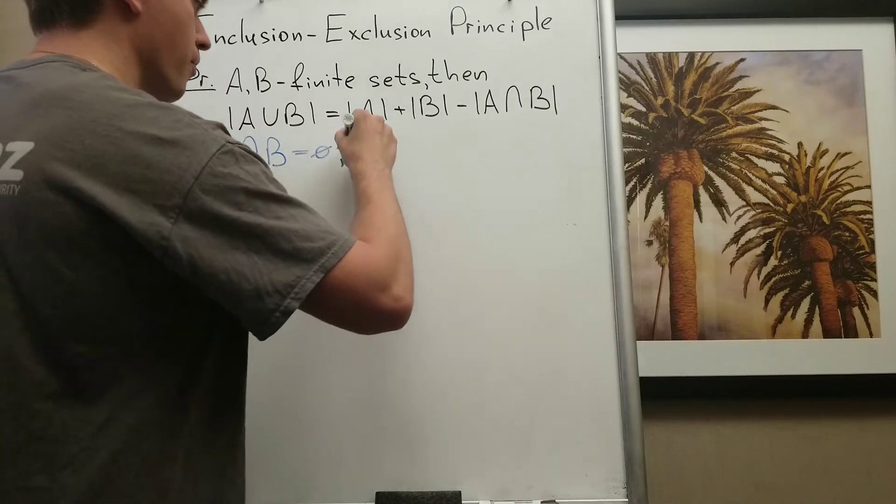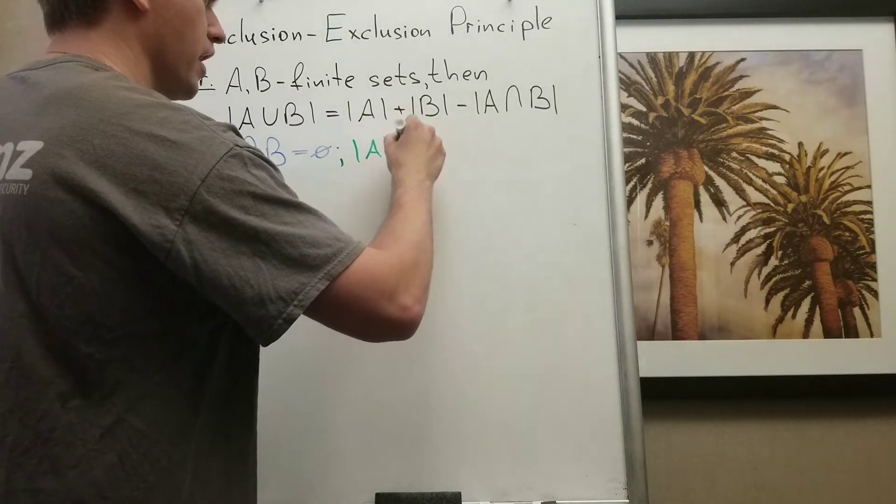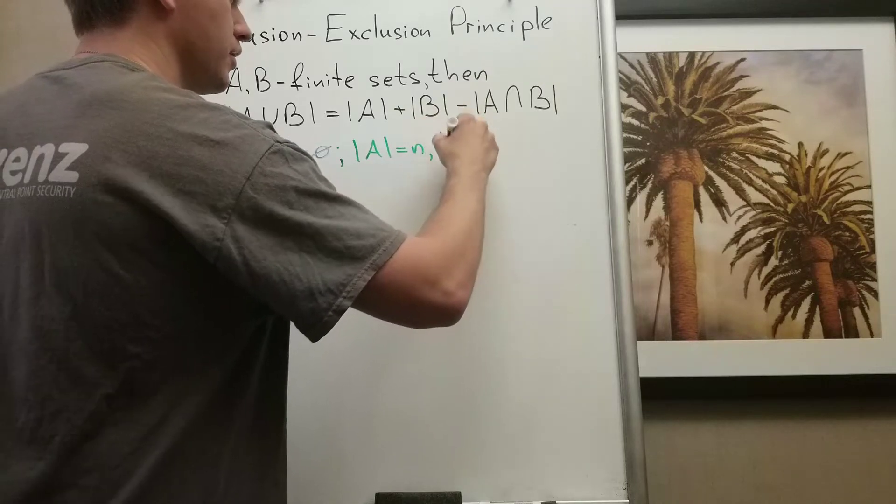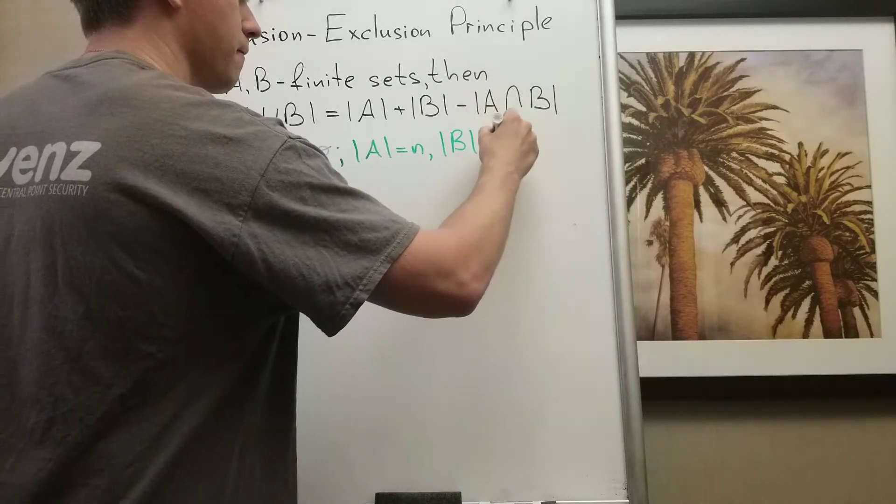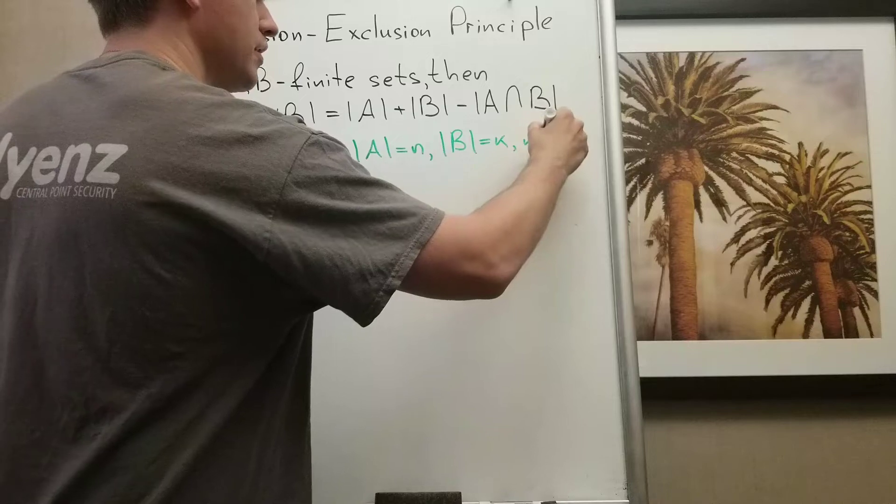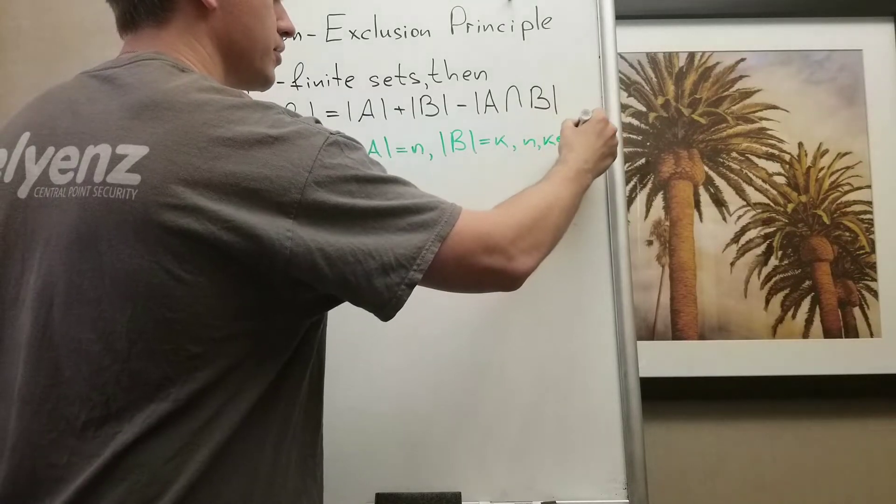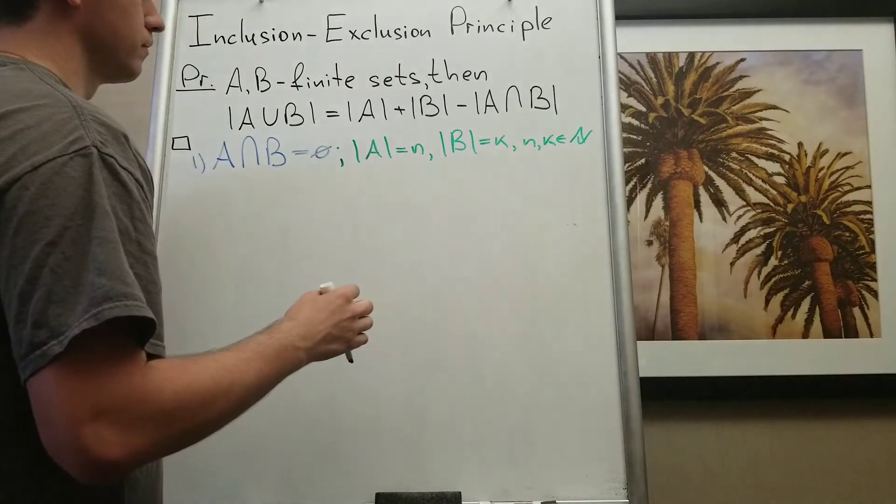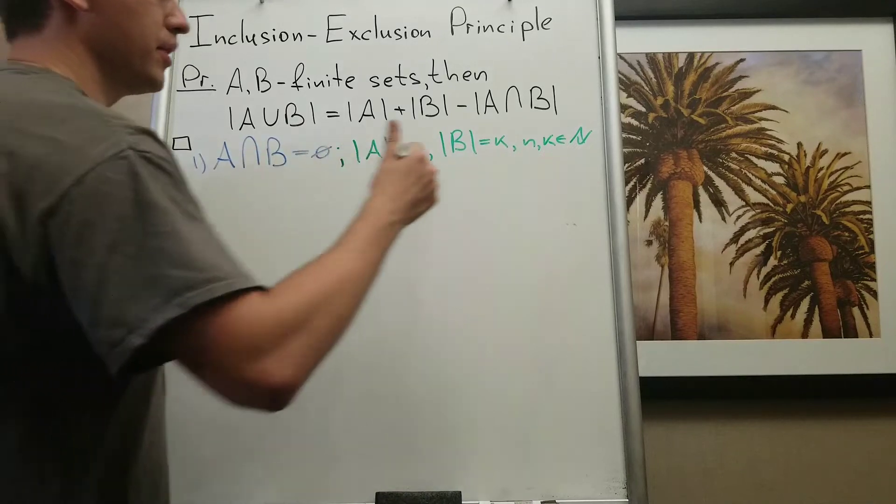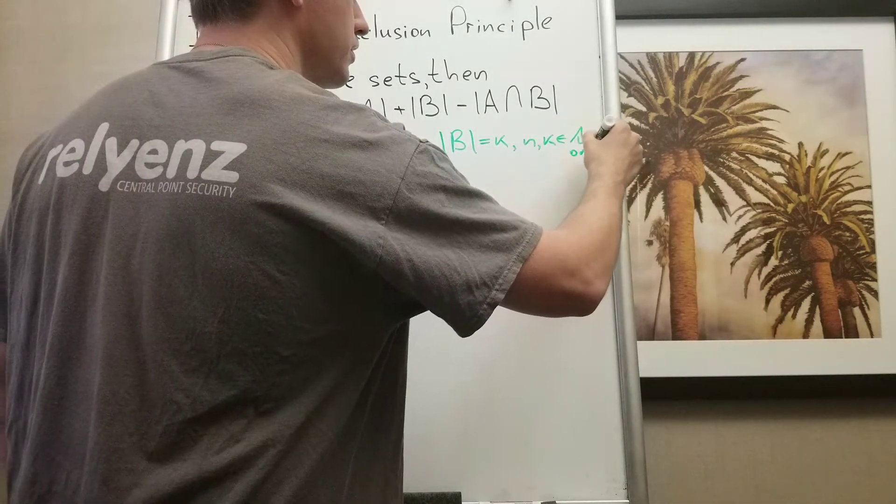So let's assume that cardinality of A is n and cardinality of B is k, where n and k are natural numbers. They can be natural numbers or 0.